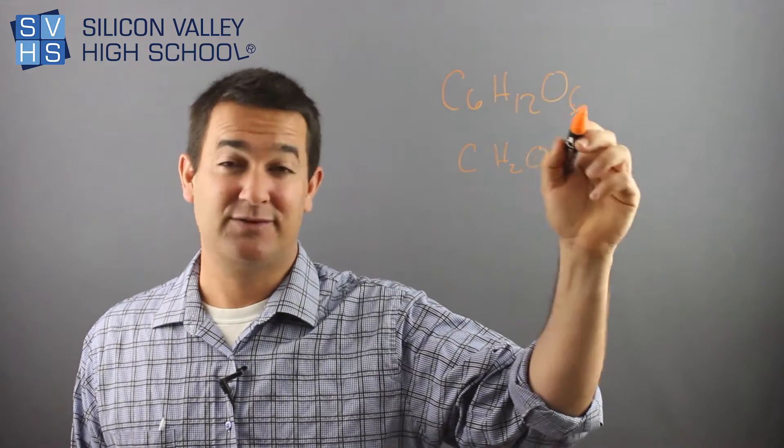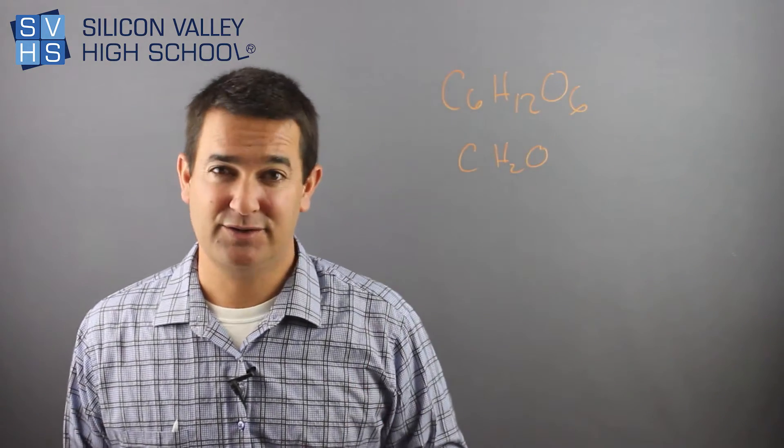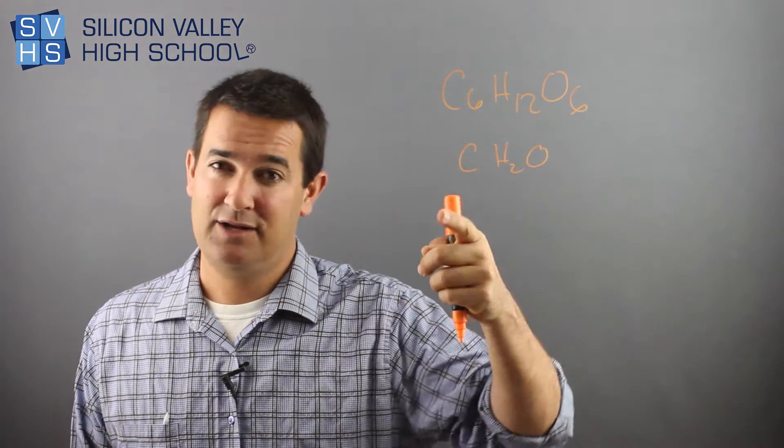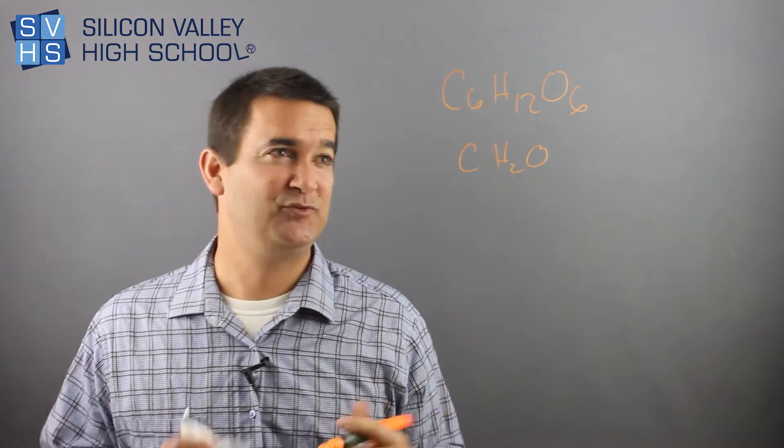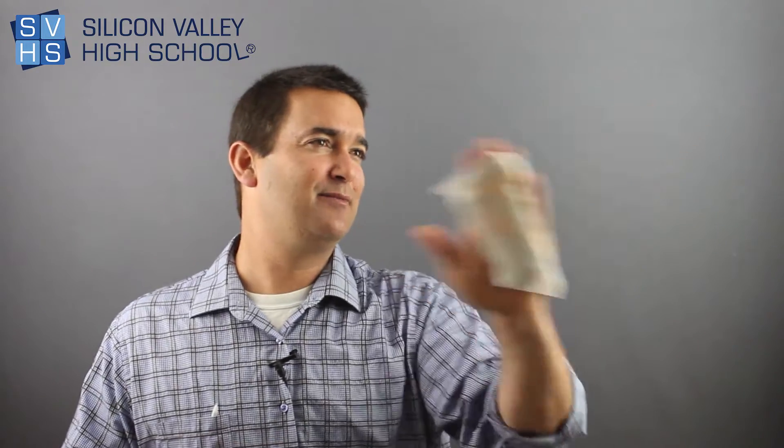And what that means is while this is the real actual molecular formula for sugar, glucose, this is the empirical formula. For every one C, you have two H's and one O. So that's an important thing to distinguish, but there's problems you'll come across in your class and they're pretty difficult.